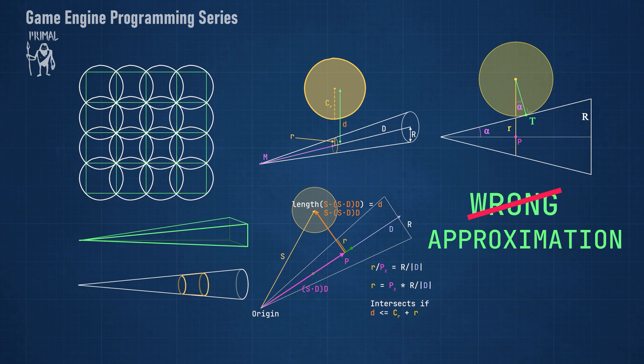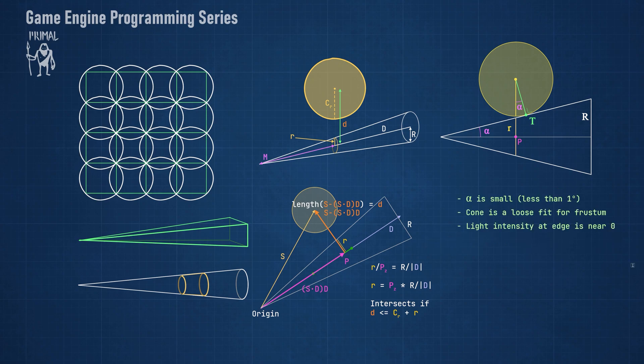The cone angle for frustums is typically small. Therefore the error in approximation is also really small. In addition, the cone is already a loose fit for the actual tile frustum except for the corners. So we would get false positives sooner than false negatives.